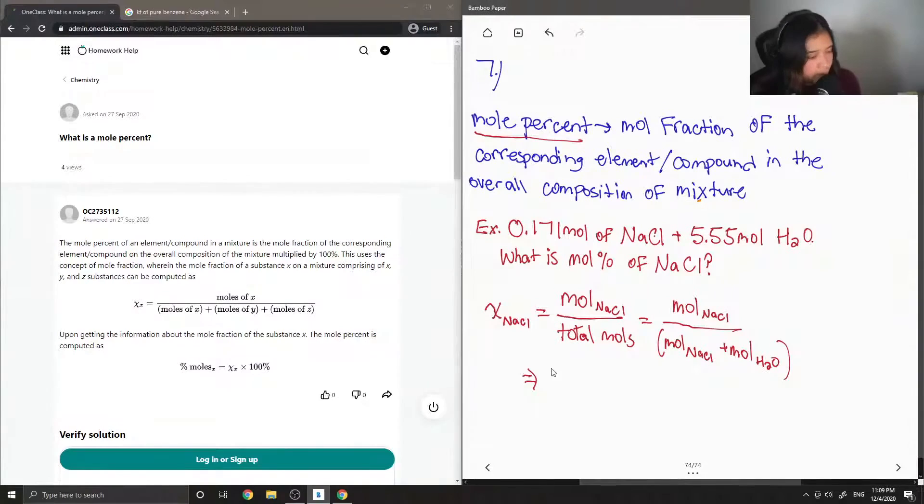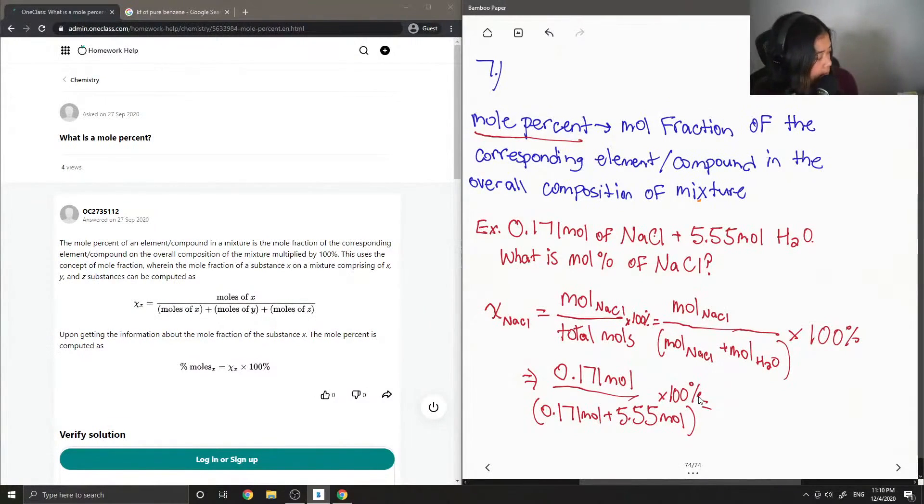Okay, so if we just sub in our values for moles. So we did 0.171 divided by 0.171 plus 5.55. Oh, and this whole thing should be multiplied by 100. Forgot to add that part. So that gives us the mole percent, and you should get around 2.99%.